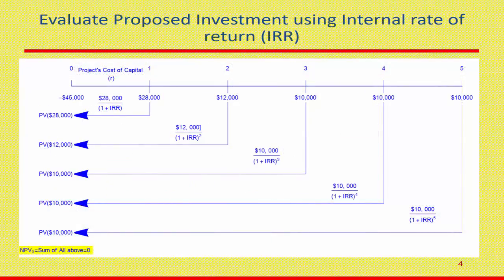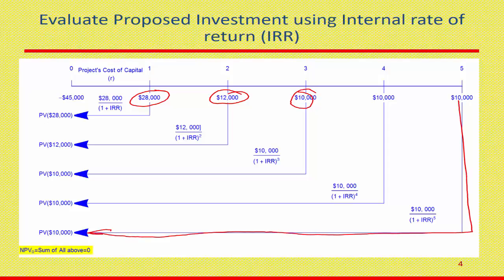Using the same concept: the first-period cash flow is discounted by (1 + IRR)^1, the second-year cash flow by (1 + IRR)^2, and the third-year cash flow by (1 + IRR)^3. You discount all future cash flows to the present, sum them all, and that sum should equal zero. We can solve this equation mathematically, but sometimes it gets very tough.